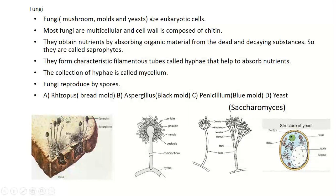Fungi are eukaryotic cells. Most fungi are multicellular and their cell wall is composed of chitin — a protein. They obtain nutrients by absorbing organic material from dead and decaying substances, so they are called saprophytes. They form characteristic filamentous tubes called hyphae, which help absorb nutrients. The collection of hyphae is called mycelium. Fungi reproduce by spores. Here we can see sporangium, sporangiophore, and spores. Different types of fungi include Rhizopus (bread mold) and Aspergillus (black mold), with structures called conidiophores for spores, and Penicillium (blue mold).